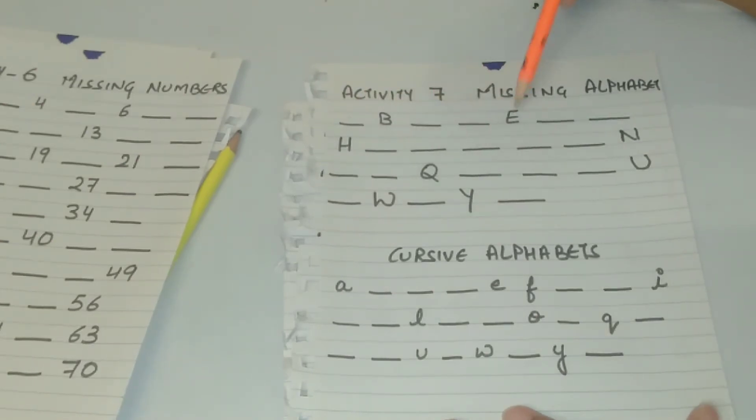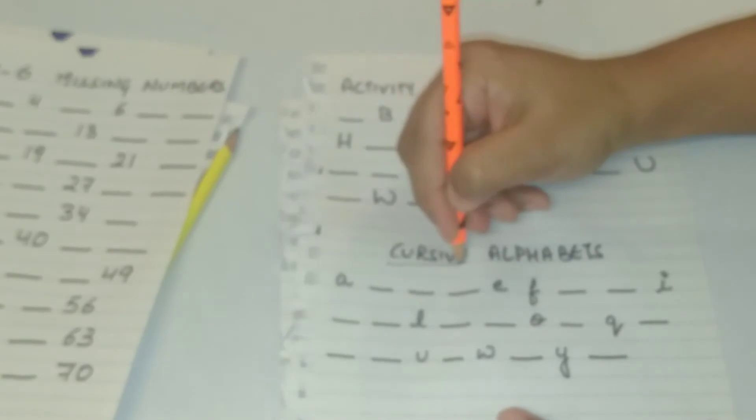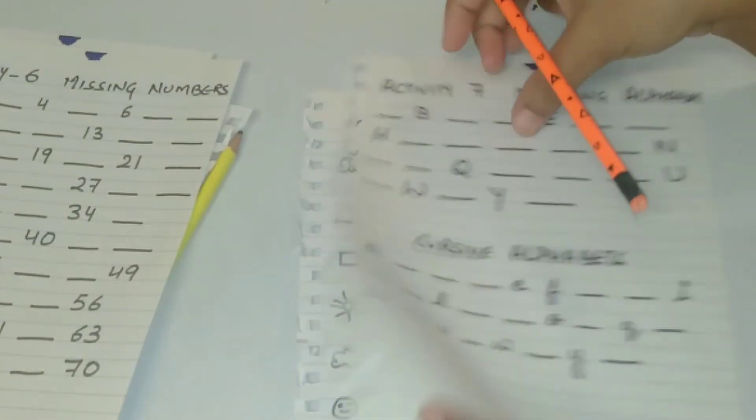Next is missing alphabets. Again like numbers, if they are not willing to write the alphabets, just make a sheet like this and they are ready to do it.